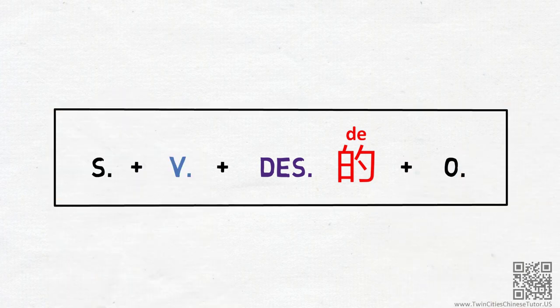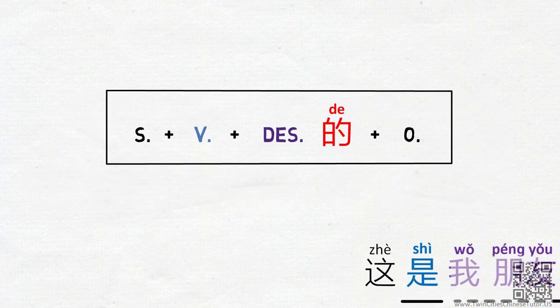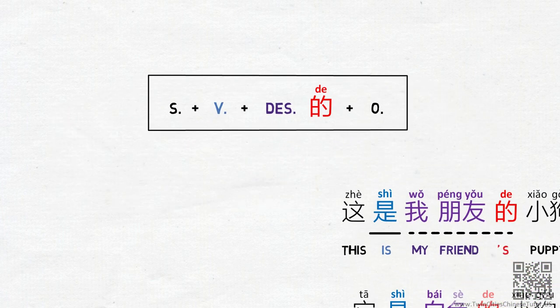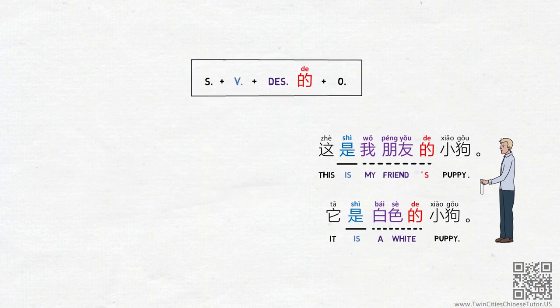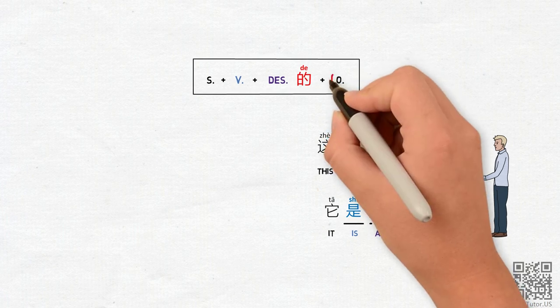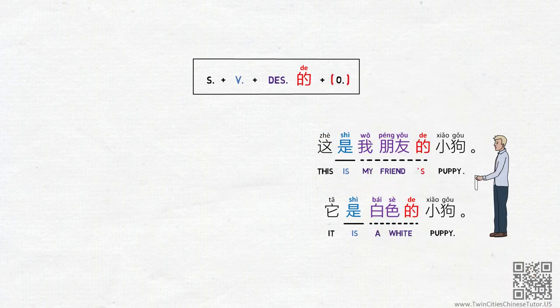Now, over time, people have gotten more efficient — or you could say, more lazy. People figured out that we could sometimes omit the object of the sentence if it is already implied or previously established, and that others could still understand us with no problem.